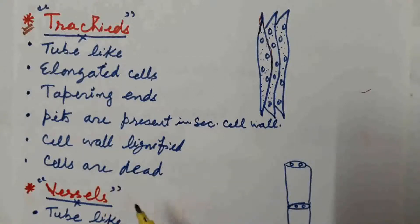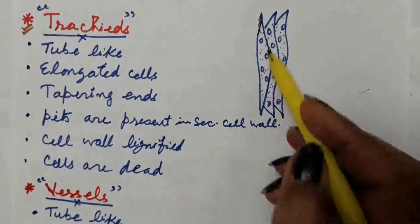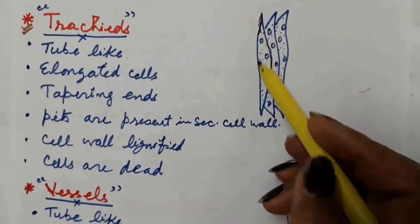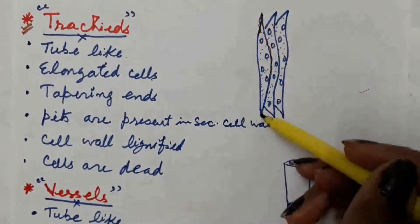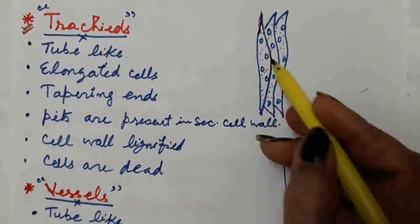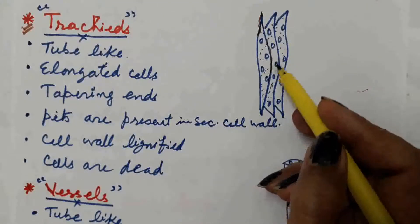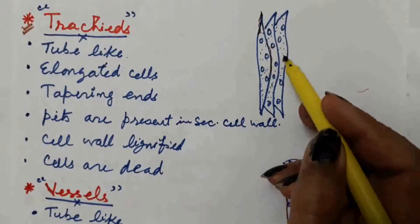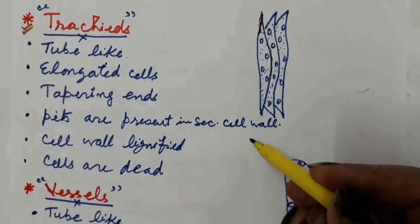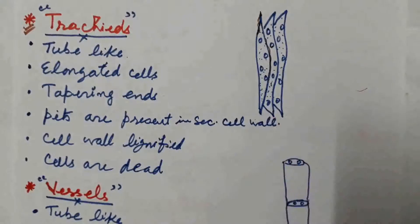These cells on maturity are dead, and they are involved in conduction of water and mineral salts along with the vessels. So tracheids are elongated tube-like cells with tapering ends. Pits are present in the secondary cell wall. The whole cell wall is thickened by lignin deposition except for certain unthickened areas known as pits, and cells are dead on maturity.